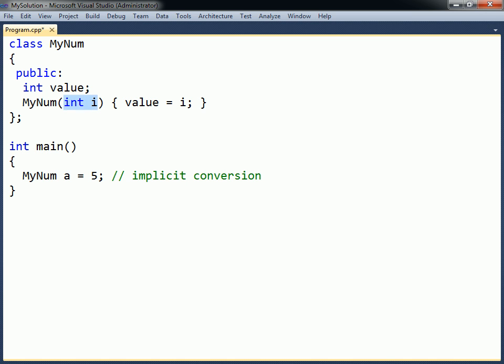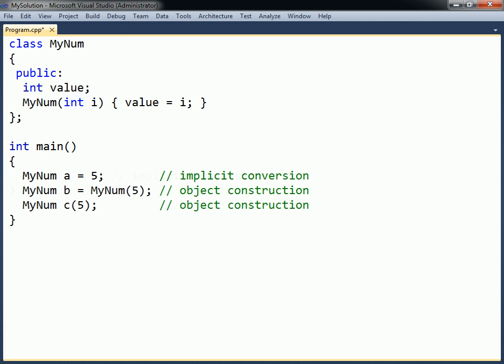This means that any constructor that takes exactly one argument can be used both for constructing objects and for performing implicit type conversions to that object type.